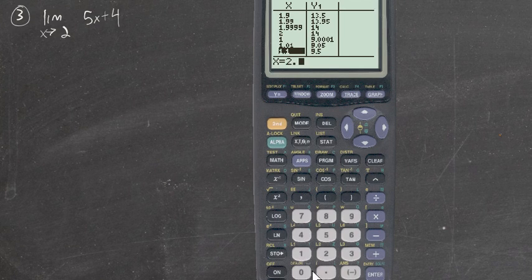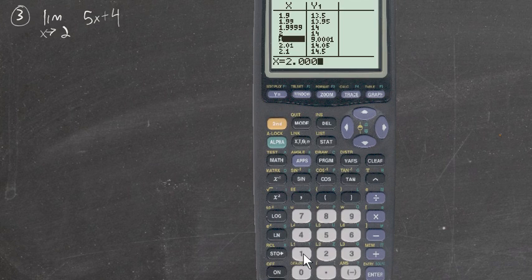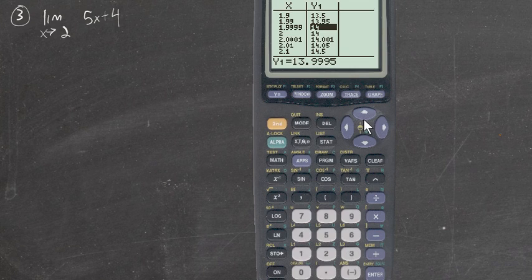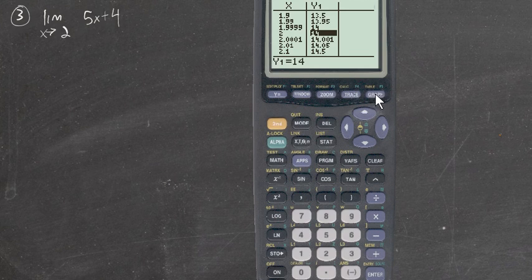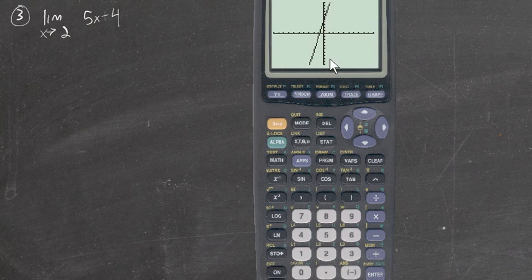On the other side: 2.1, 2.01, 2.0001 — it's really close to 14. In fact, the function is worth 14. You might be expecting that as we use this table and approach 2, there's going to be some problem. But not for this function. 5x plus 4 — you can plug 2 in there, no problem. This is one of those well-behaved functions where you can just plug the number in. The graph is a continuous line with no problems as we approach 2.